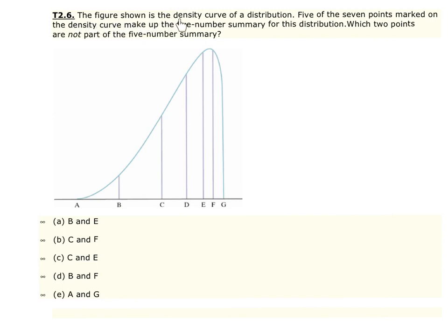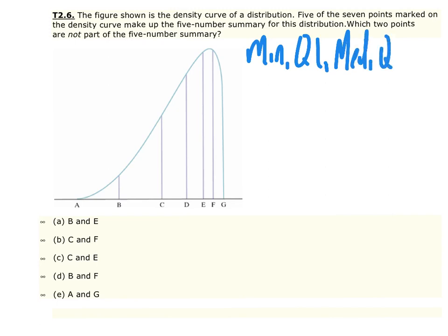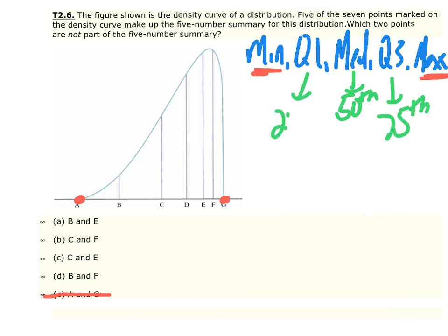Number 6: The figure shown is the density curve of a distribution. Five of the seven points marked on the density curve make up the five-number summary. Which two points are not part of that five-number summary? First, recall that the five-number summary is: min, Q1, median, Q3, and max. The minimum is A and the maximum is G, so any answer with A or G cannot be correct. The median is the 50th percentile, Q3 is the 75th percentile, and Q1 is the 25th percentile.